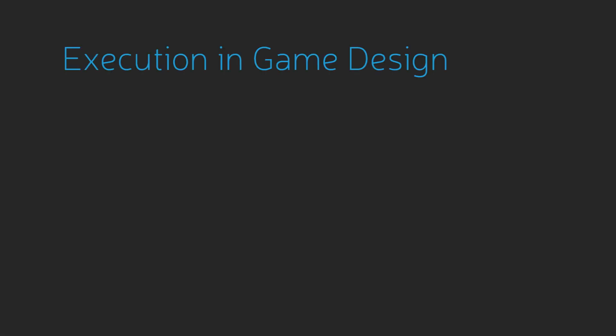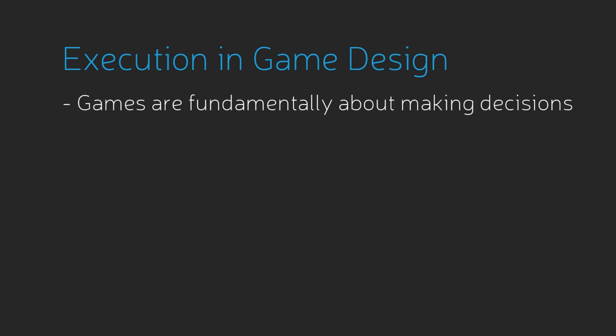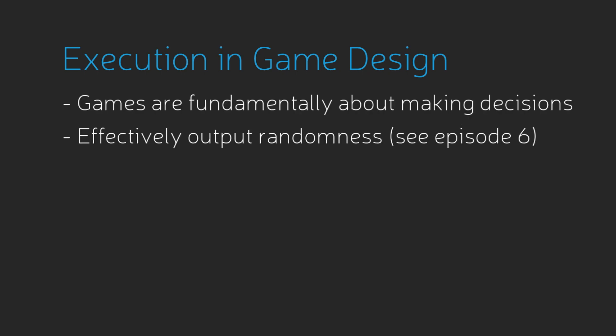Games, as I defined them in episode 2 of this program, are fundamentally about making decisions. So in the same way that a system based on decision making is harmed by hard output randomness, a system like this is equally harmed by execution.